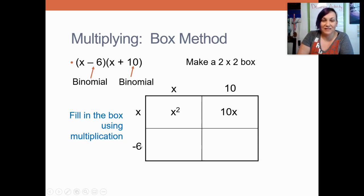Next, I like to jump down to my second row, and in my second row everything's going to be multiplied by the negative 6 because that's what's next to my second row. So in this first box, I'm going to do the negative 6 and then the x. So negative 6 times x is negative 6x. And then over here in my last box, this is on the second row and the second column. So negative 6 times 10 is negative 60. So that's how you fill in a box. It's really just lining them up and then multiplying them together.